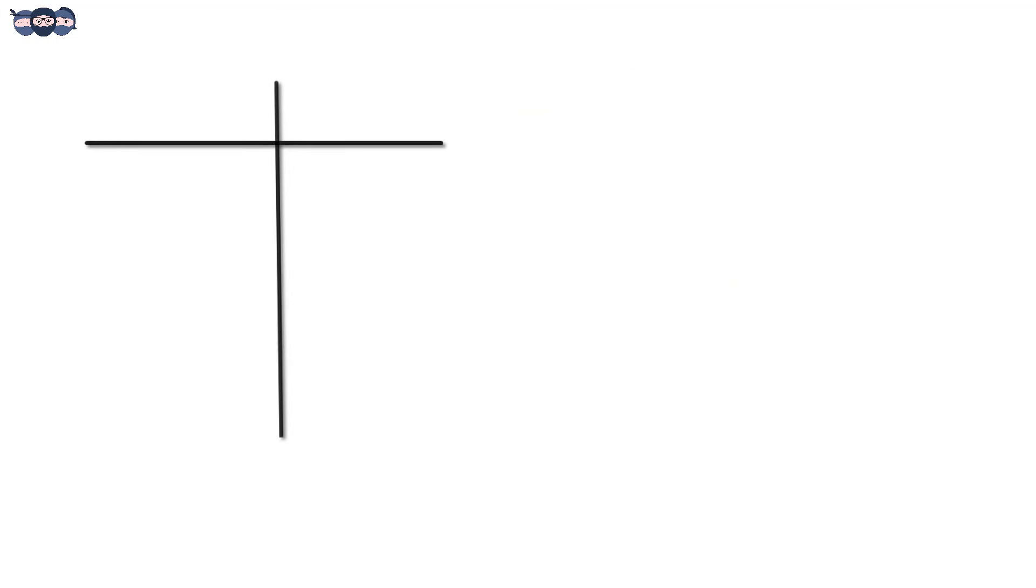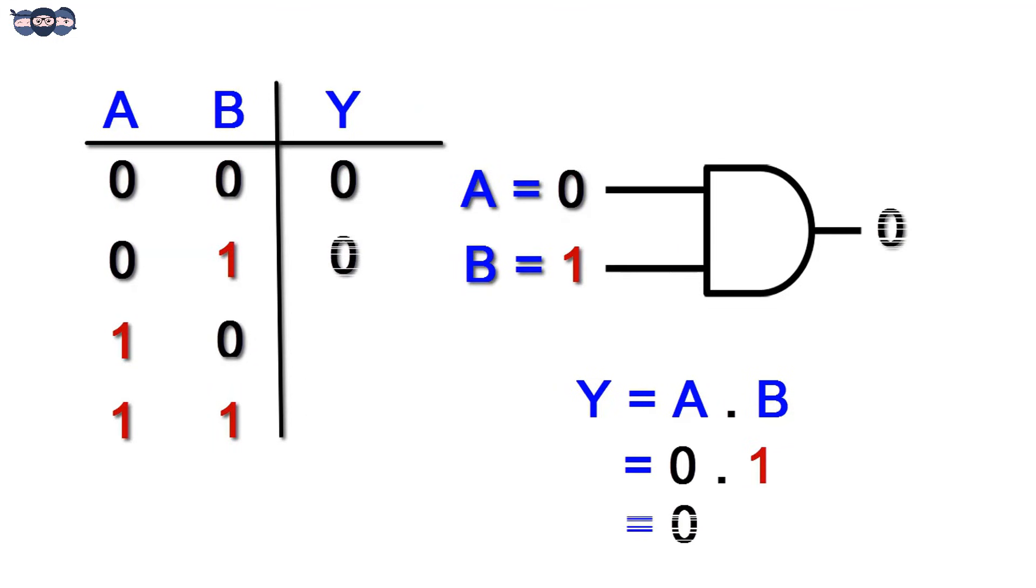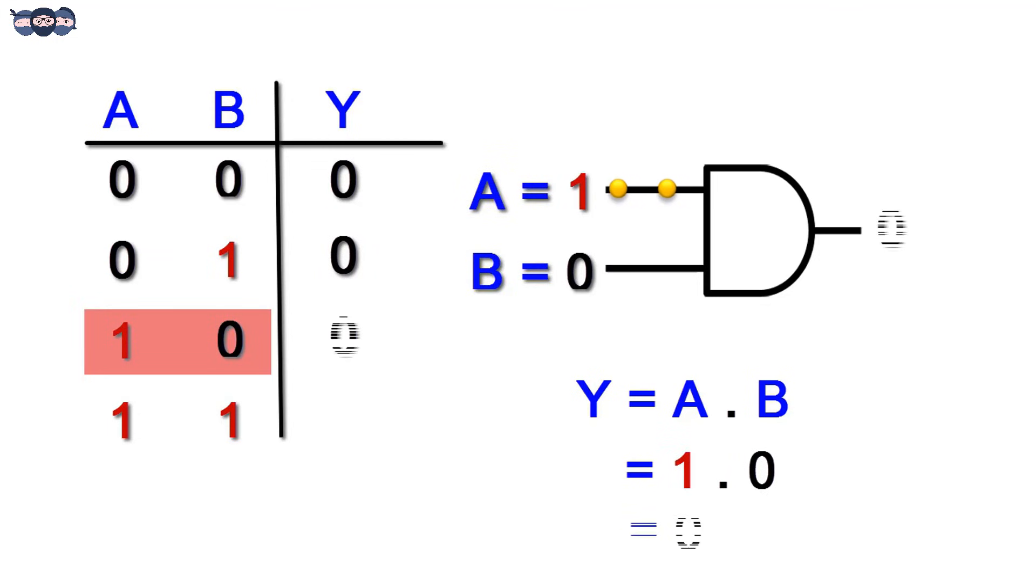Let's construct the truth table. When both the inputs A and B are low, the output Y is low. The output of AND gate is low when either of the inputs are low. Both the inputs A and B need to be at logic 1 for the output to be 1.